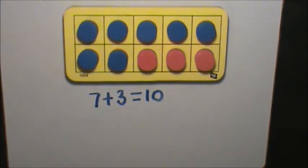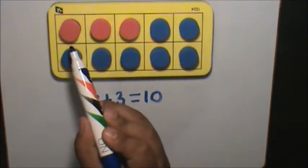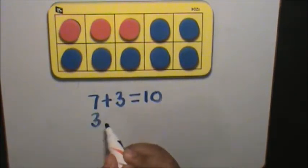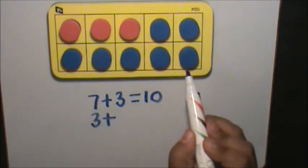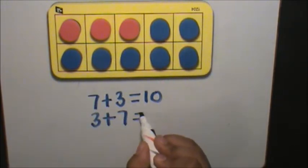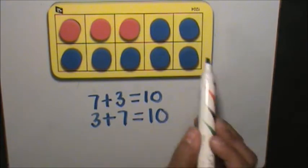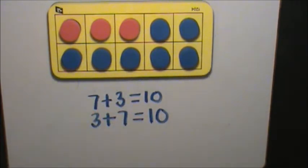Now, I can flip my 10-frame or turn my 10-frame. I have 3 red plus five, six, seven blue. And it equals 10 because my 10-frame is full.